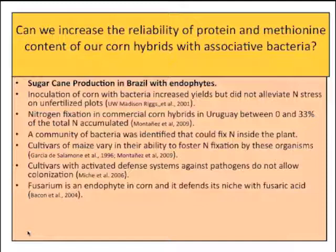At UW Madison, there was a group working on inoculating corn with bacteria, and they did find that it increased yields, but it didn't alleviate nitrogen stress. So corn wasn't fixing nitrogen, but it might be stimulating the plants. And they were using nitrogen-fixing bacteria in order to establish them.